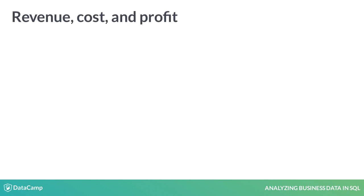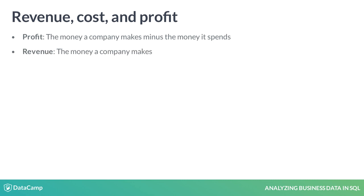A company's performance is often judged by its profits. Profit is the money a company makes minus the money it spends. The former is revenue, while the latter is cost. Accordingly, the formula for profit is: profit equals revenue minus cost. Deliver's revenue is the money its users pay for the meals they order. Some of its costs include the salaries paid to its employees. For now though, let's focus on revenue.